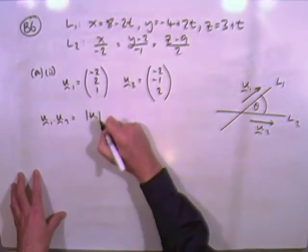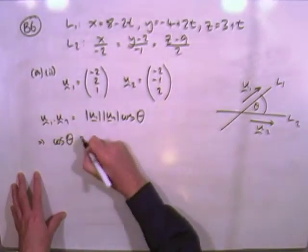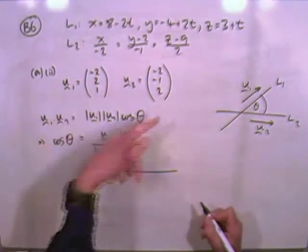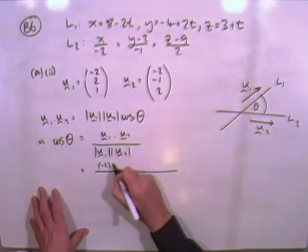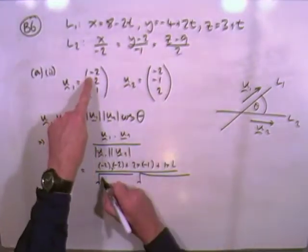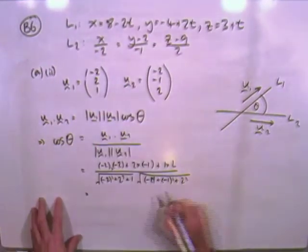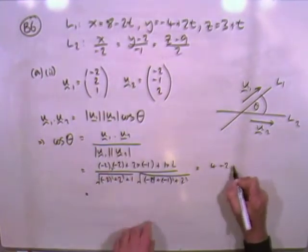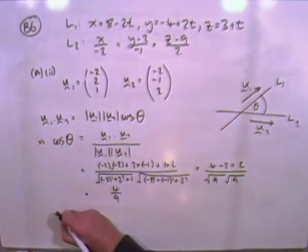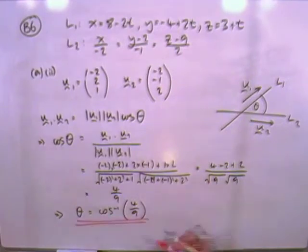Right, so the scalar product. Scalar product would be the length of one times the length of the other times that angle that you want, the angle between them. So rearranging that will have the scalar product in component form divided by two lengths. Then it's just put all the numbers in. X times X, Y times Y, Z times Z. The lengths of the vectors square all the components. Then go through the calculations. A 4, a negative 2, and a 2. 4, 4, 1, 9. Same again, 9. So that's 4 upon 9, which means theta will be the inverse cos of 4 ninths. And that's that one done.